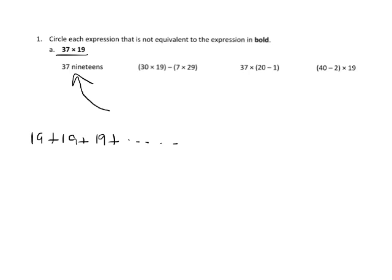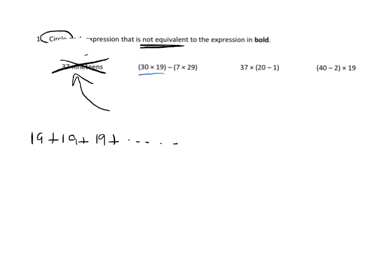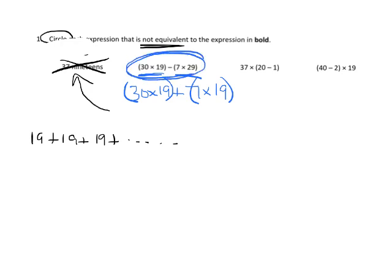So we're being told to circle each expression that is not equivalent. This first one is equivalent, so I'm going to cross it off. Now this next expression — we have 37 19s, and if we take 30 19s and add 7 19s, that's 30 times 19 plus 7 times 19, which gives us 37 19s. But this expression is not equivalent — it has a 29 instead of a 19, which I think might even be a typo.